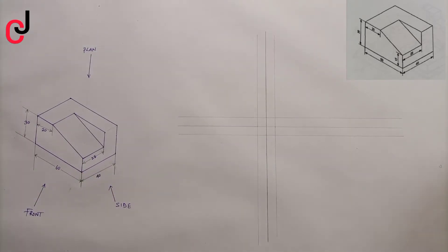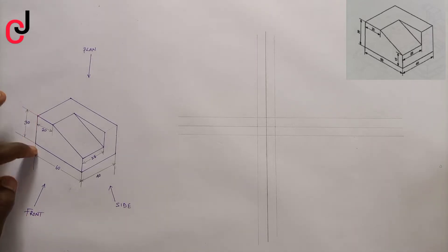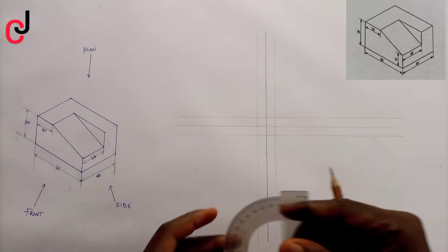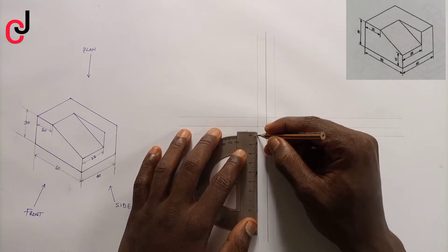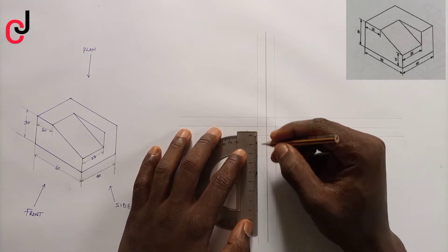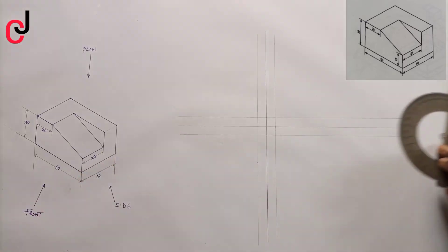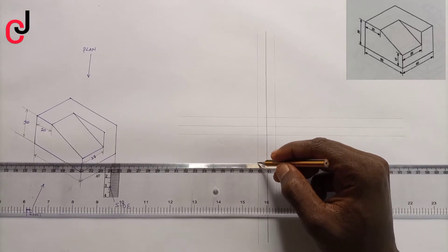The first thing we need to note is we'll start from our front view. The height of our front view is 30 mm, so measure 30 mm, indicate it to the point, and then we'll project the point to my left.